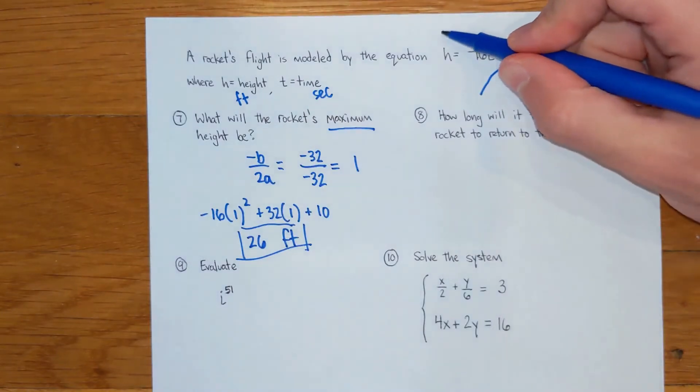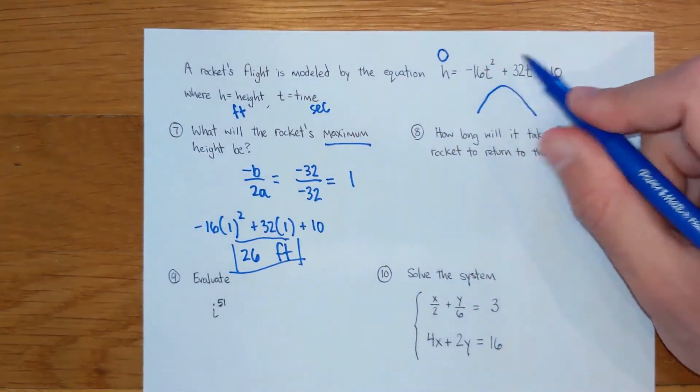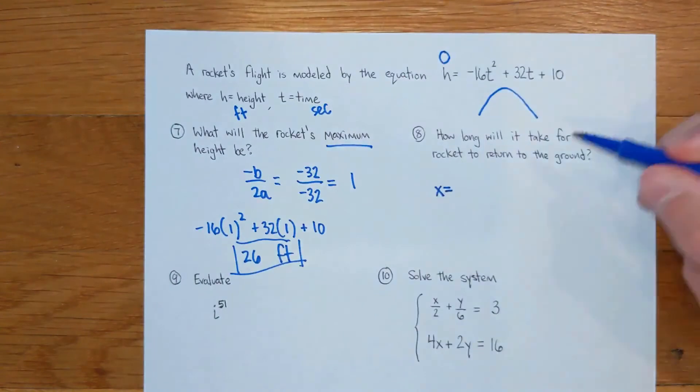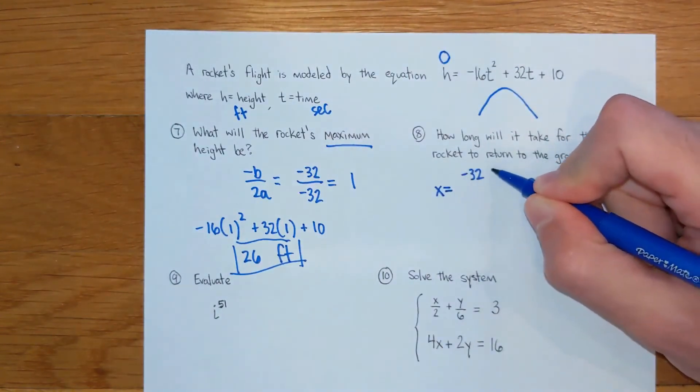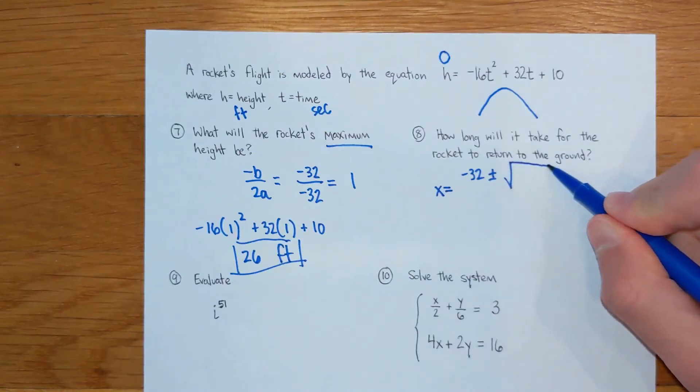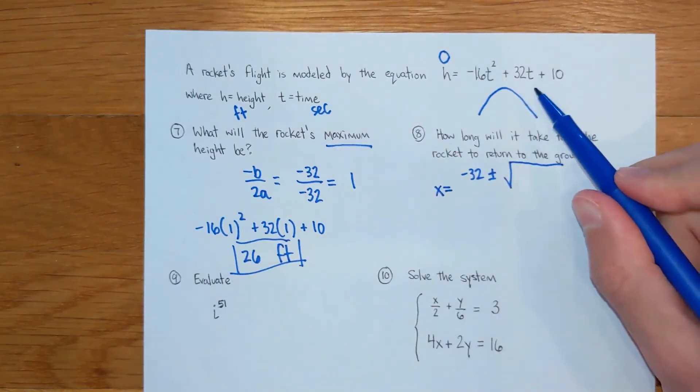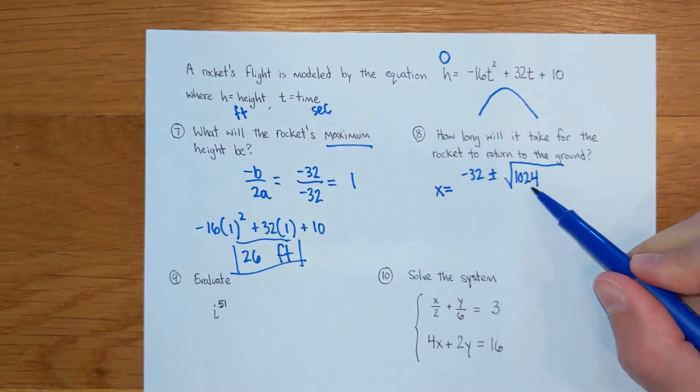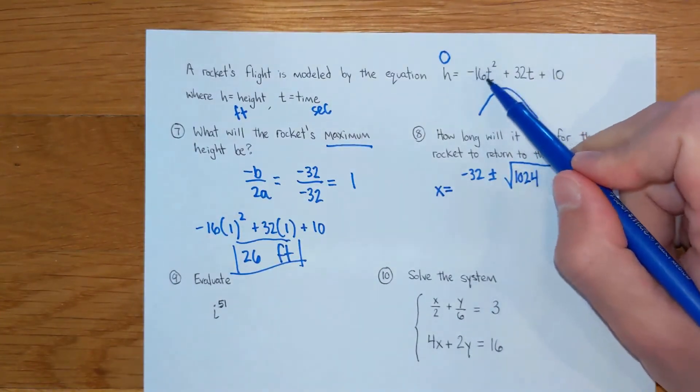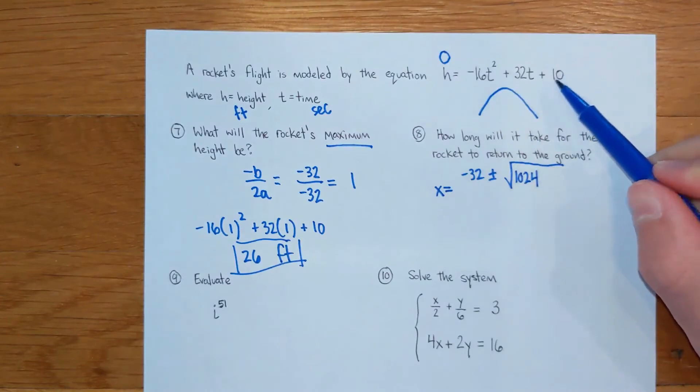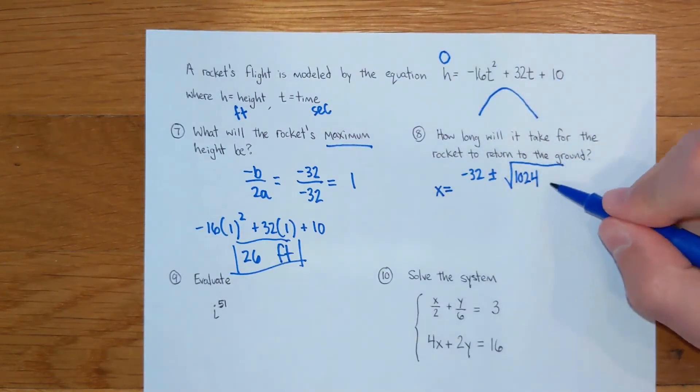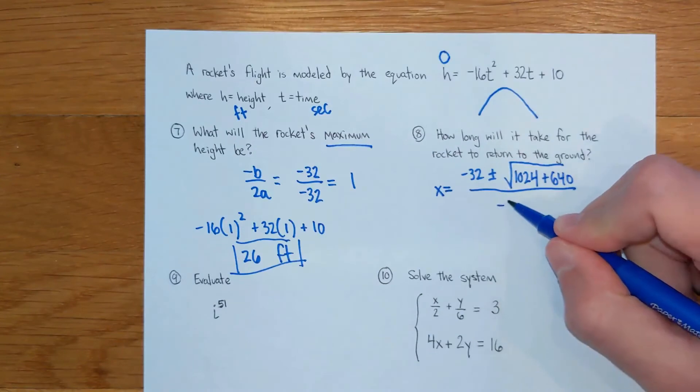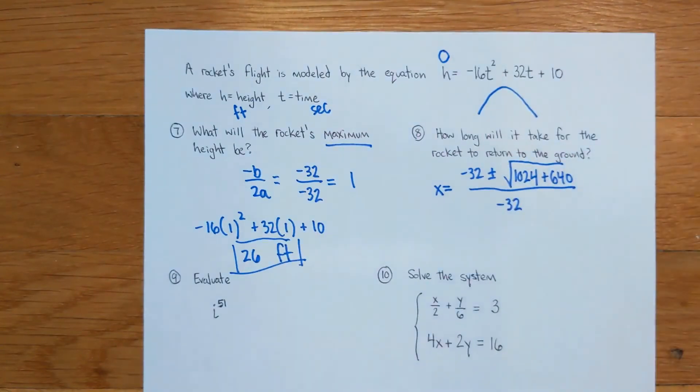Number eight asks how long it will take to return to the ground. And when it returns to the ground that means the height is going to be zero. We did these problems back first semester, but you're going to throw this guy in the quadratic formula. So we have for our setup here, x equals negative b. Negative b is going to say negative 32, plus or minus the square root, b squared would be a 32 squared, and 32 squared if you do the math on that is 1024. So that is 32 squared. Then I have to go negative 4 times negative 16 times 10. Negative 4 times a times c, that part is a positive 640, all over 2 times a, so that's all over a negative 32.